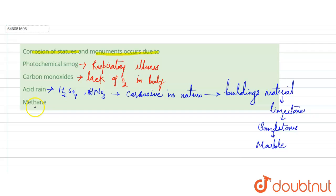The next option is methane, which is marsh gas and is used as fuel in biogas.